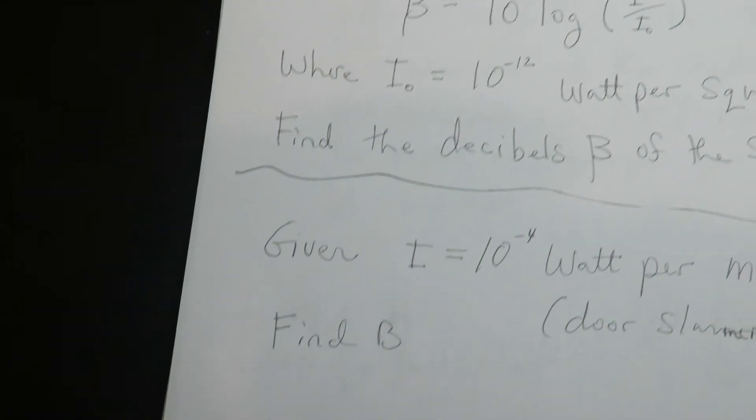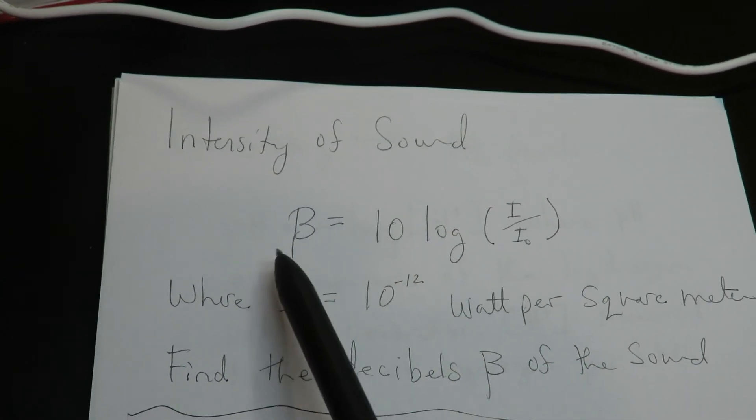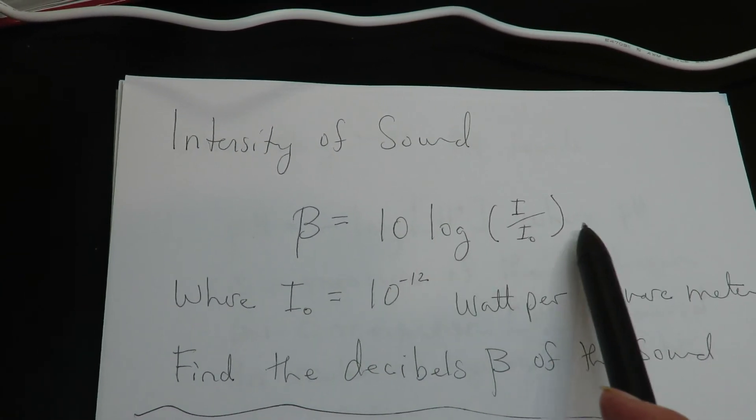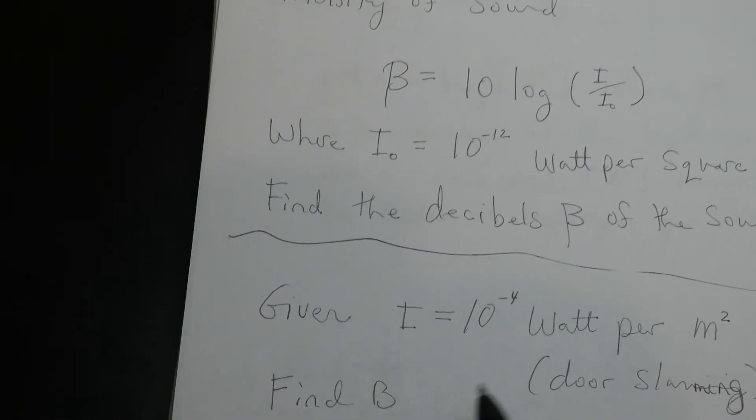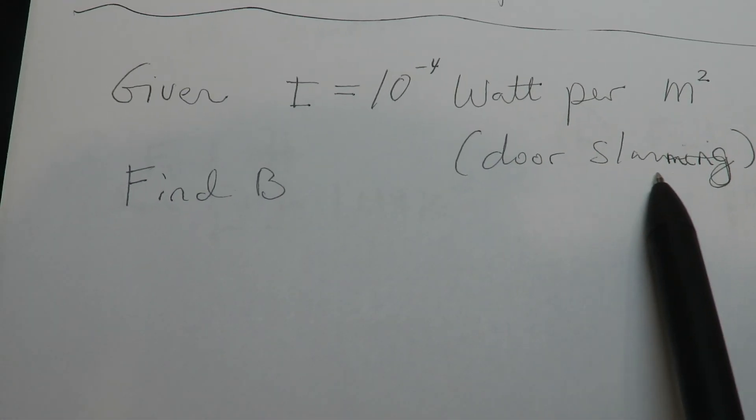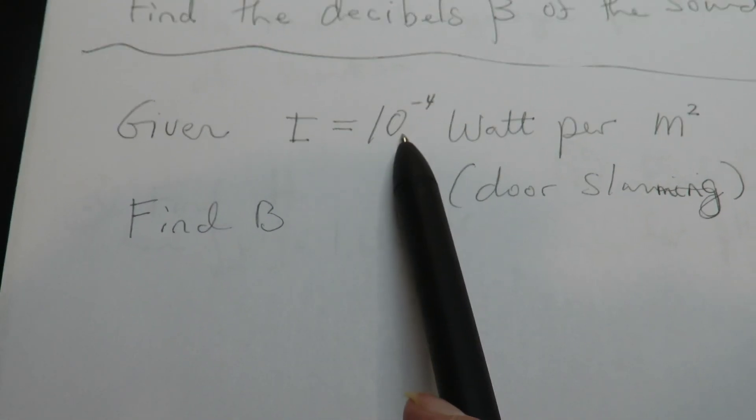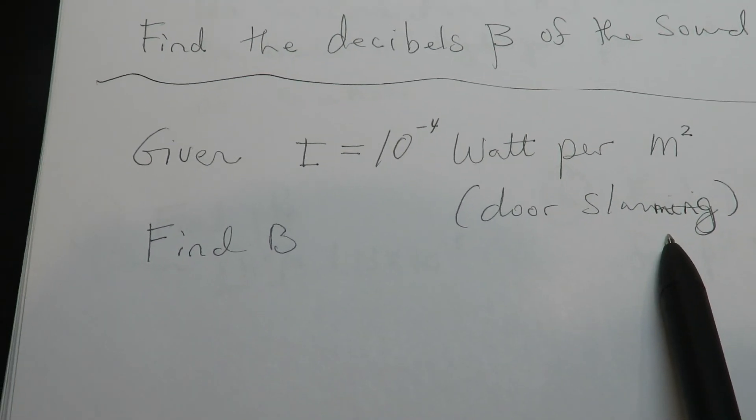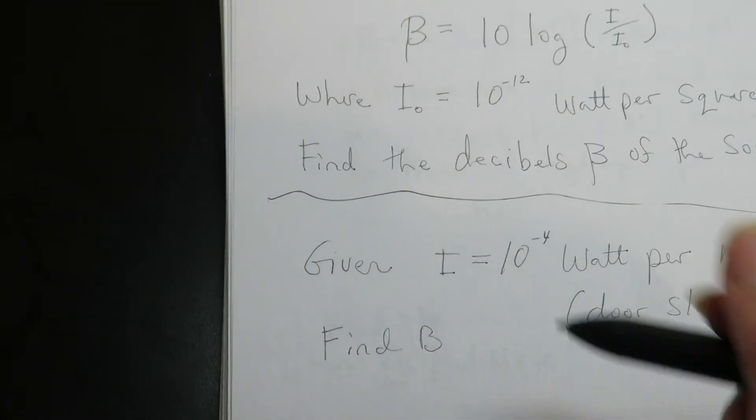So this one is intensity of sound. So this is the log formula for intensity of sound. We're going to find in decibels beta when given an intensity of 10 to the negative 4, that's equivalent to a door slamming. And that's in watts per meter squared. So I'll use the formula here.